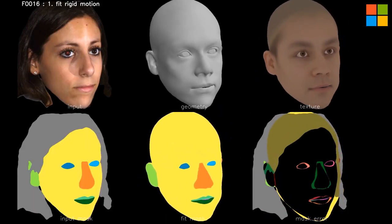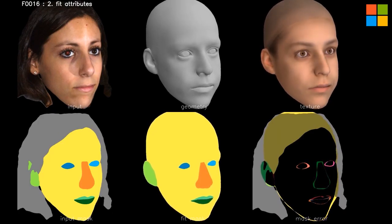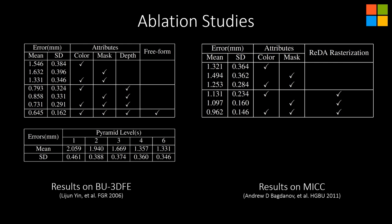Here is a video showing our 3-stage fitting process. We first roughly align our face model with the target by fitting landmarks. Then we fit our face model with image attributes such as depth and face-parsing masks. In the last stage, we further add free-form deformation to fit the residuals of image attributes. In our ablation studies, we show that aggregating all attributes can effectively reduce the fitting error, and with the help of free-form deformation the fitting error can be further reduced. In our ablation study on the REIDA rasterizer, we see improvements over z-buffer-based differentiable renderer and confirm the effectiveness of the multiscale pyramid, empirically set to pyramid level 6 in our experiments.